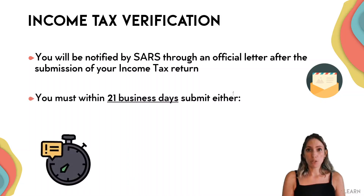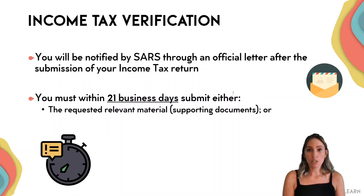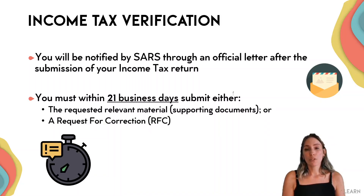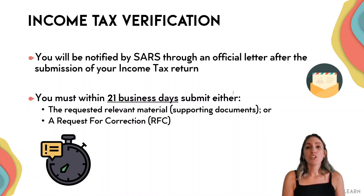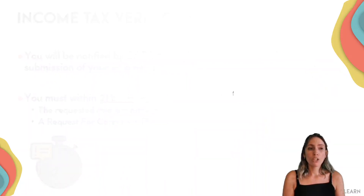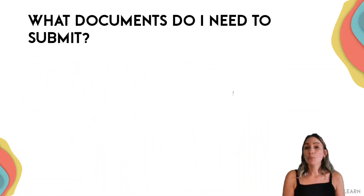After the submission of your tax return, once you receive this letter it will be dated and you have 21 business days to either submit the information that SARS has asked for, or to request a correction if you've made a mistake or found something additional you want to add. You have 21 business days from that date to respond, as SARS is doing a simple verification to validate the information in your tax return.